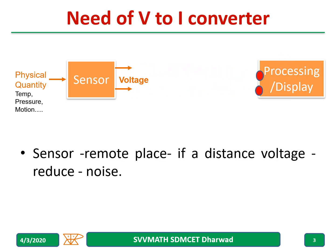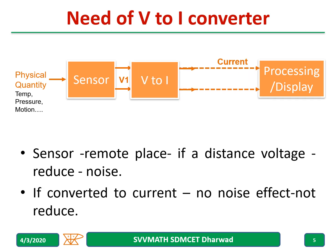If the distance is large, the voltage when it reaches the processing unit or display unit will be reduced, or sometimes because of noise the voltage sent and the voltage received will be different. Therefore, voltage is converted into current. Instead of sending a voltage from the sensor to the processing or displaying unit, the voltage is converted into current.